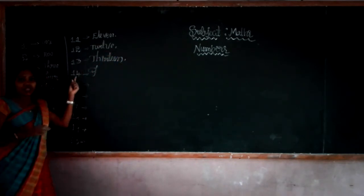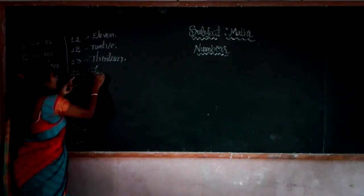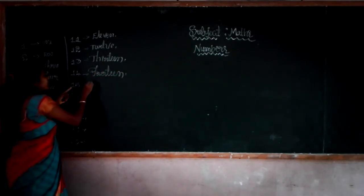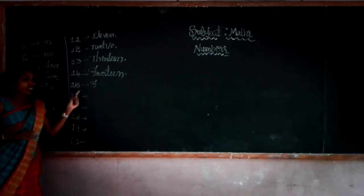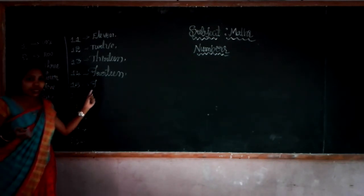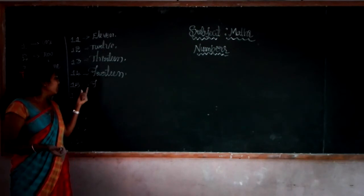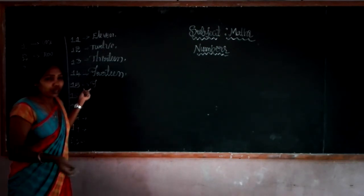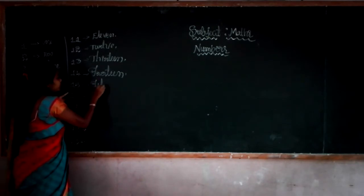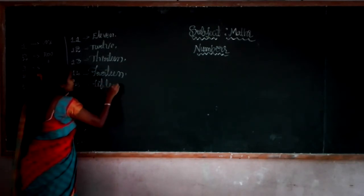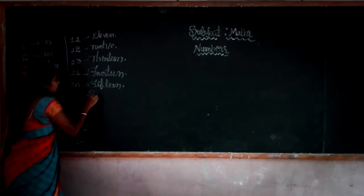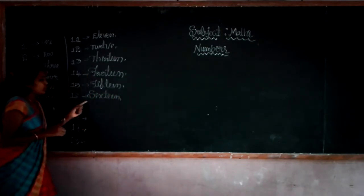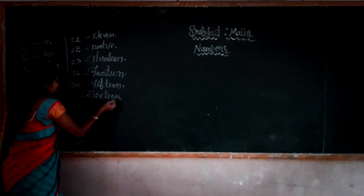Already you know the spelling of 4, which is F-O-U-R. You just add T-E-E-N to get 14, FOURTEEN. Then 15 — here FIVE is F-I-V-E, but for 15 it becomes F-I-F-T-E-E-N. Then already you know the spelling of 6, and you just add T-E-E-N to get 16, SIXTEEN.